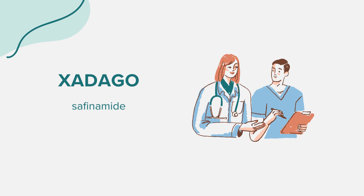A common question about Xadago relates to dietary restrictions. It's essential to avoid foods high in tyramine, such as aged or fermented meats, while on this medication. For any specific queries related to Xadago, always consult with a healthcare provider. That concludes our overview of Xadago. This information is for educational purposes and should not replace professional medical advice. Always consult with a healthcare provider for any questions or concerns. Thank you for joining us.